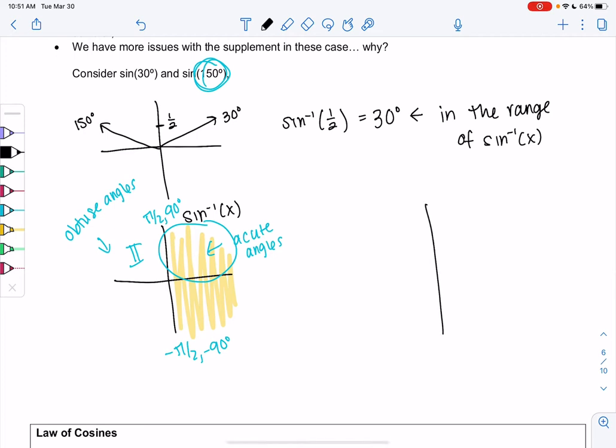So sine inverse will find acute angles, but it won't find obtuse angles. And so that'll be an issue if my angle is actually 150.